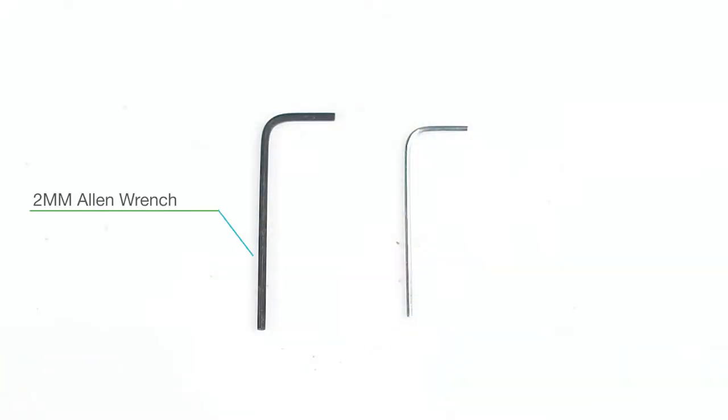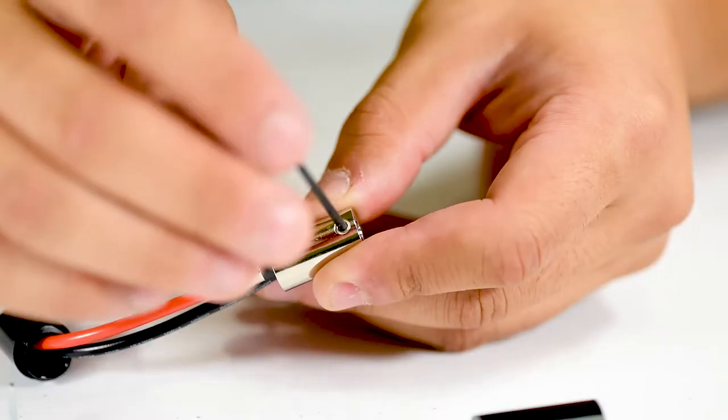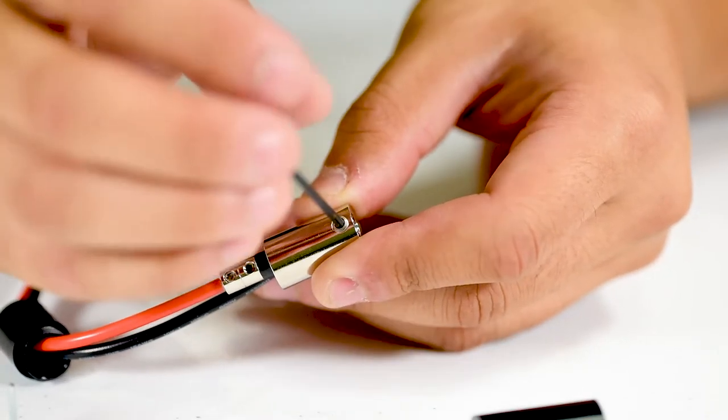Using the provided 2 millimeter Allen wrench, loosen but do not remove the M4 set screw.